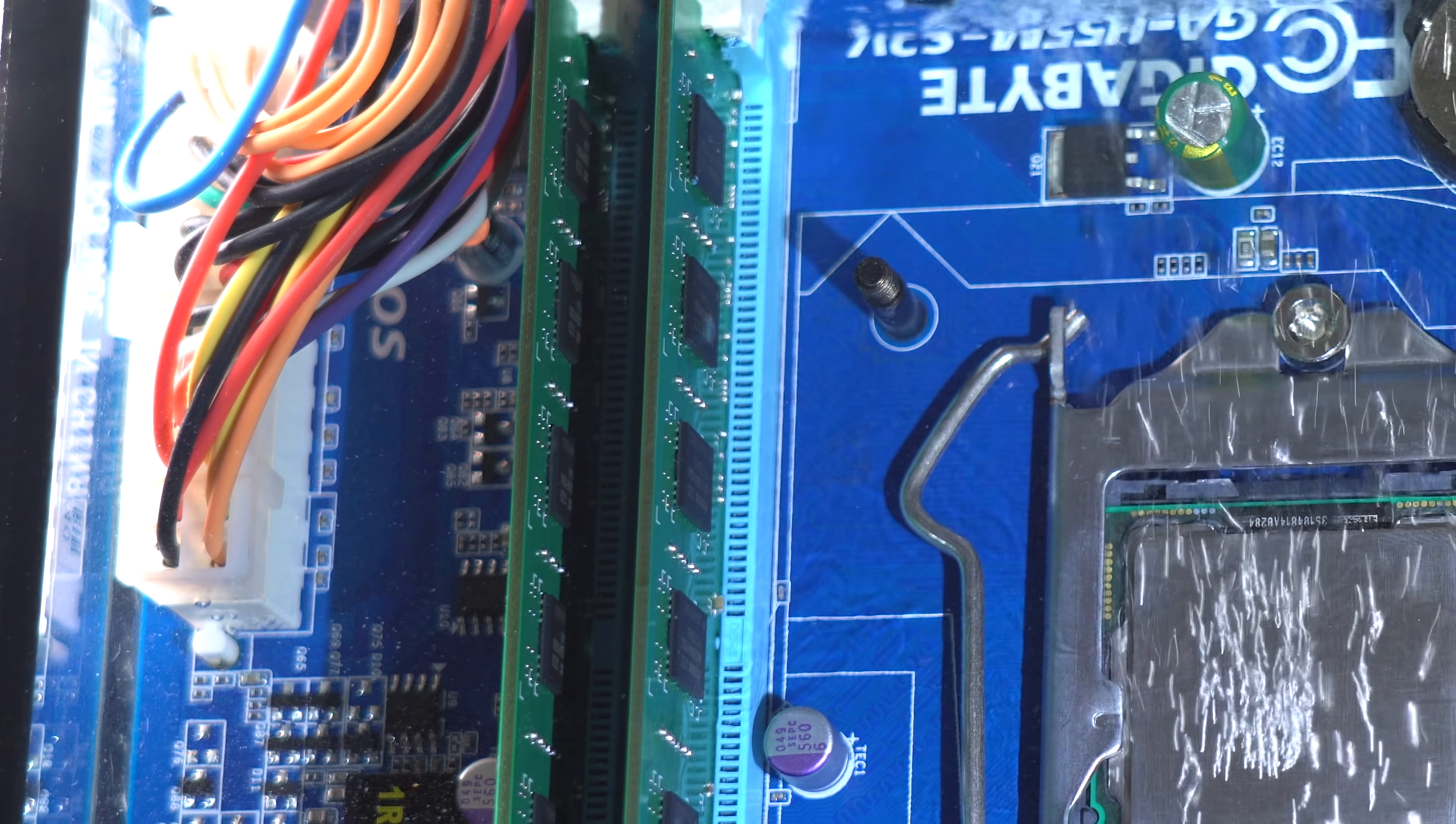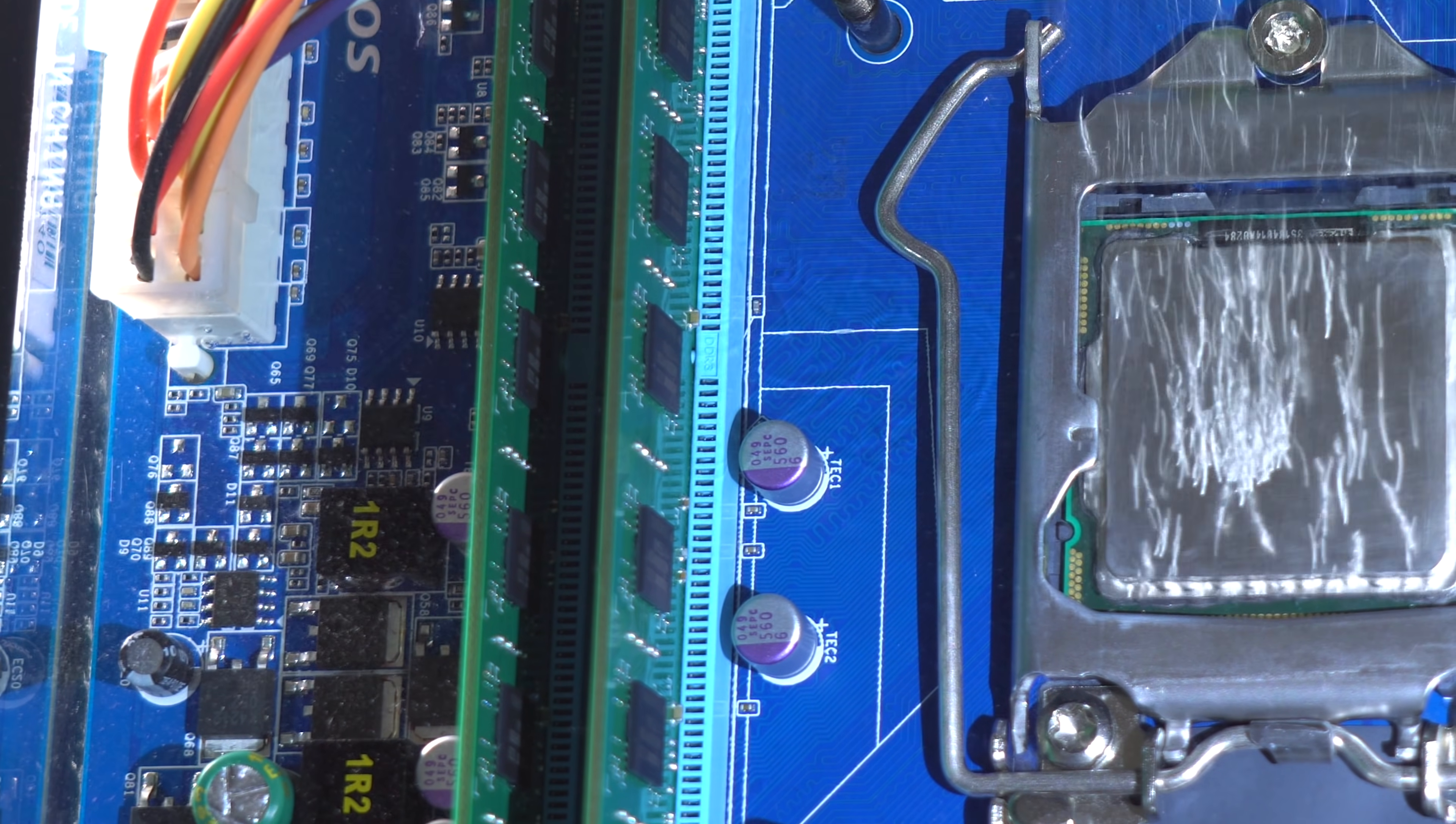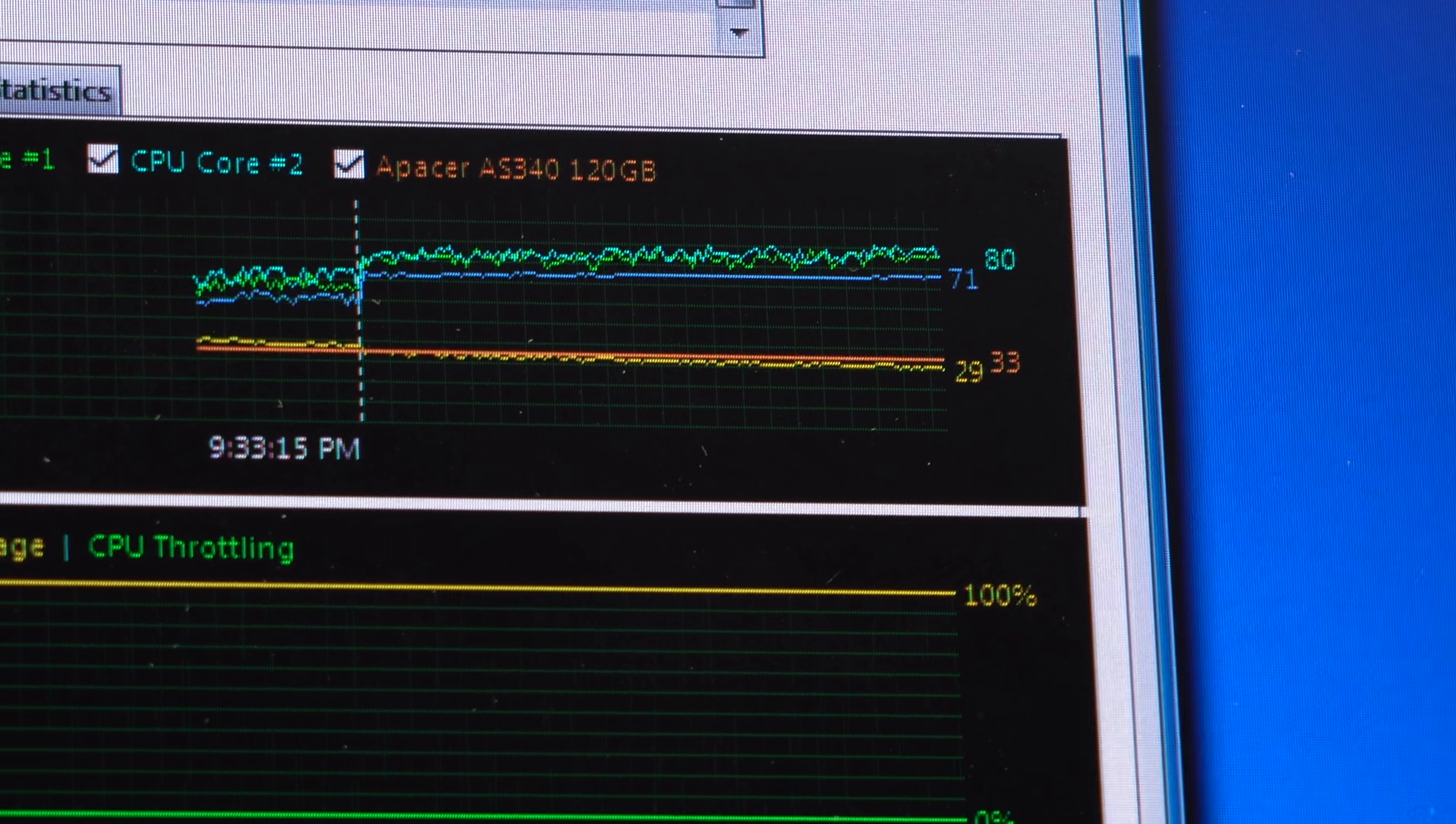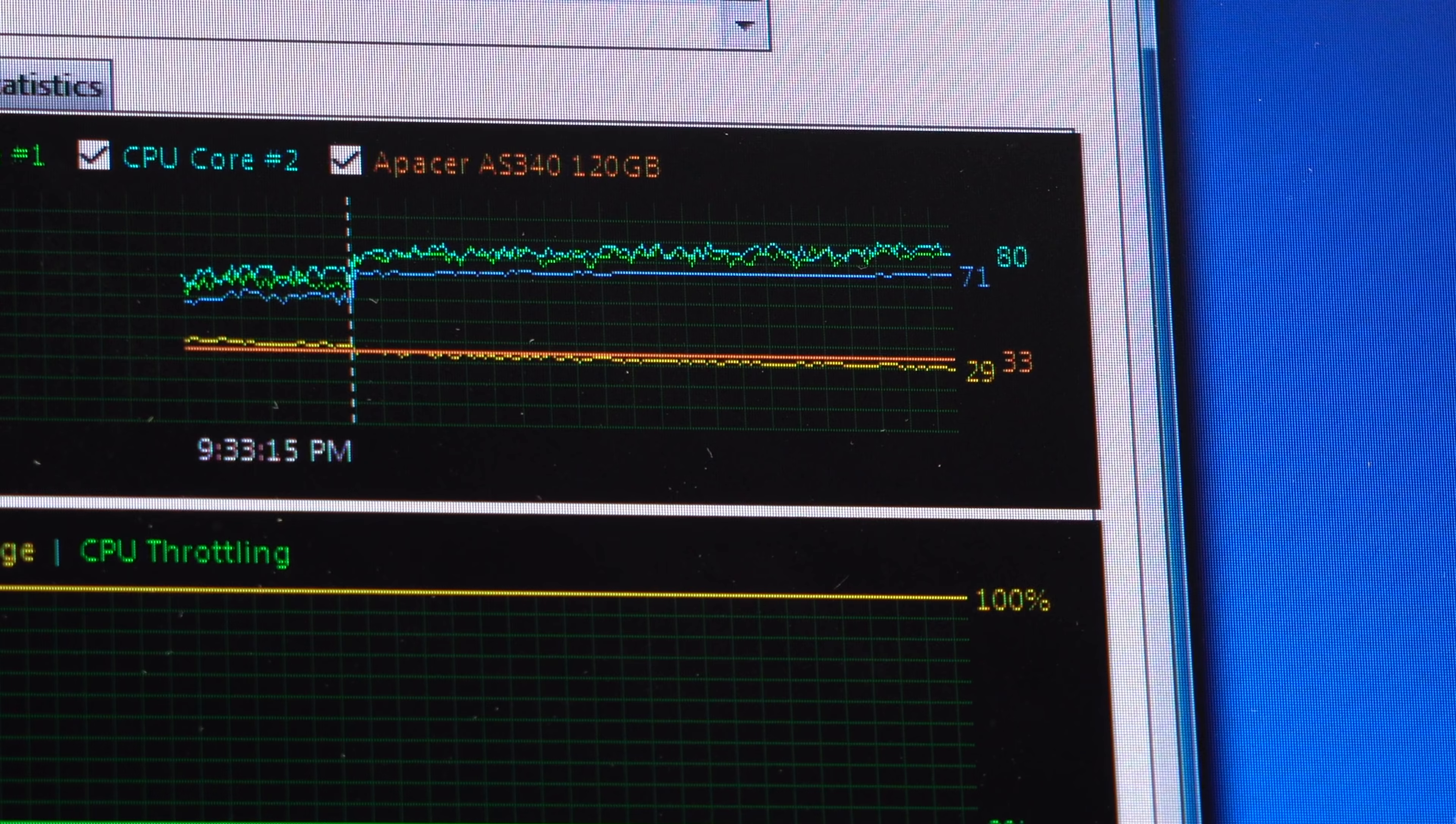Besides the processor, other computer parts also cooled off in the dry water, for instance such as RAM memory and some transistors. After the test the temperature settled at 75 degrees Celsius which points to the fact that the efficiency of my setup is quite low.